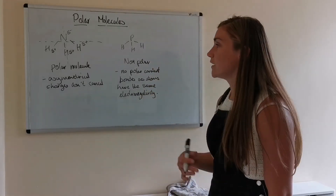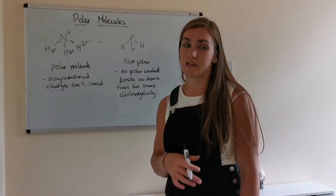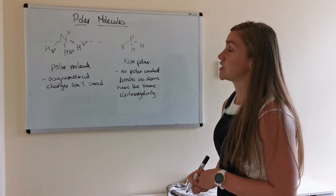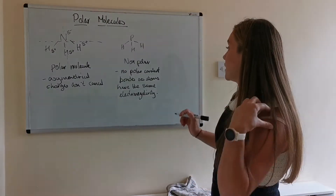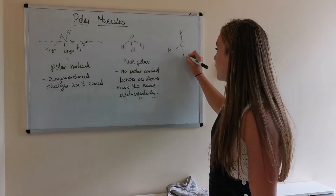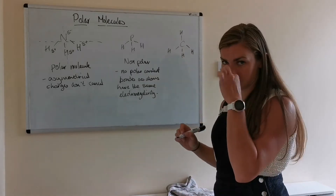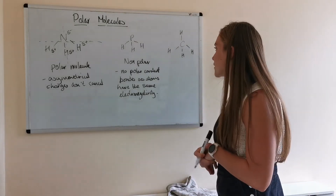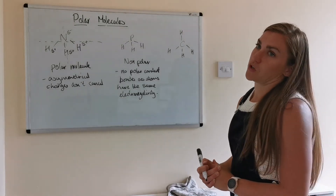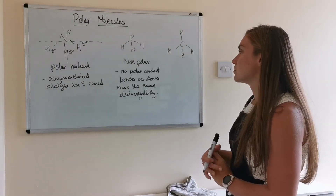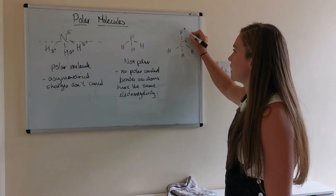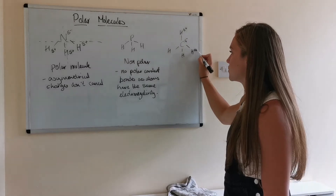If there's no difference in electronegativity between the atoms, it's never going to be a polar molecule anyway, because there won't even be any polar covalent bonds in it. Methane is CH4 and adopts a tetrahedral structure, which hopefully you'll remember from National 5. If we look at the electronegativity values, carbon is slightly more electronegative than hydrogen — only slightly — which means the carbon would have a partial negative charge and all the hydrogens would be partial positive.